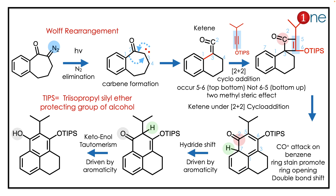This can be written as a single step for clarity, though shown here as two steps. Then it forms a [2+2] cycloaddition. Under heating conditions you would have a [4+2] cycloaddition, but here under light it undergoes [2+2] cycloaddition. Then you have ring opening due to ring strain, giving a new six-membered ring and a fused carbon framework.